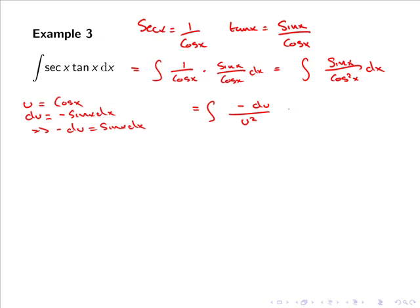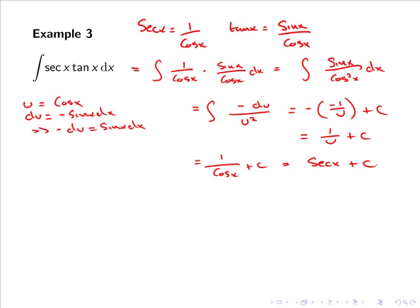When we calculate this integral we get −(−1/u) + c, or simply 1/u + c. Replacing u, our final answer is 1 over cos x + c, or simply sec x + c, since sec x = 1 over cos x.